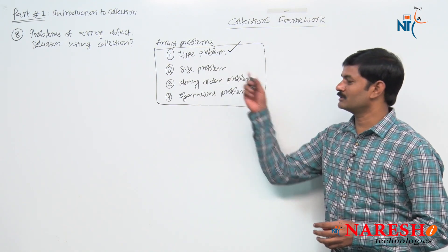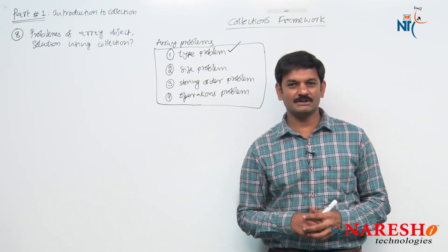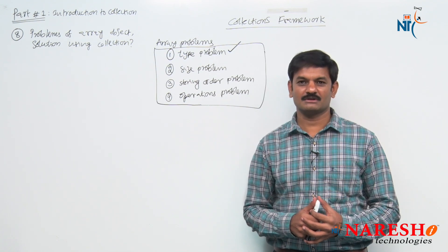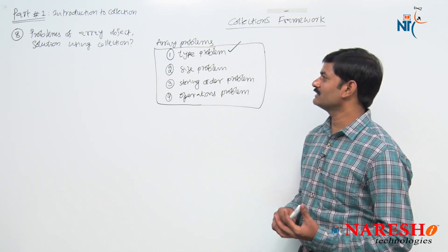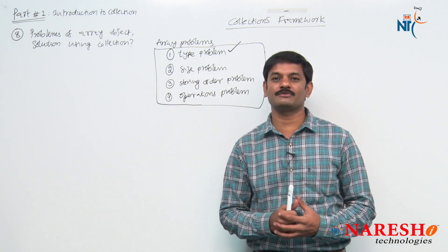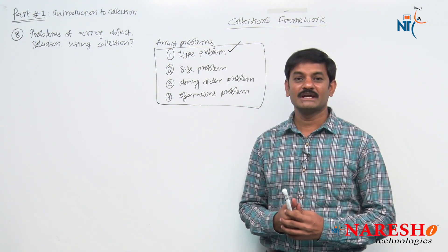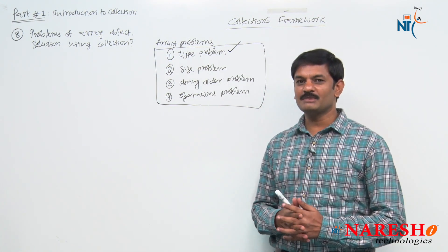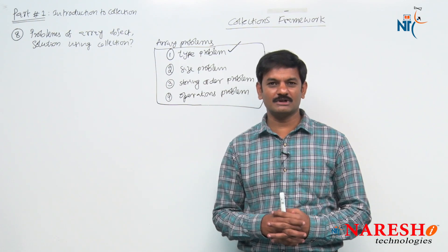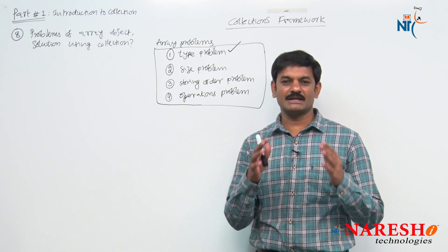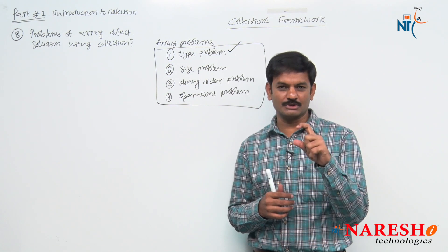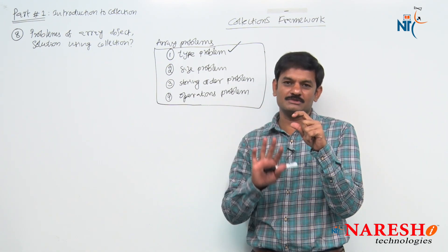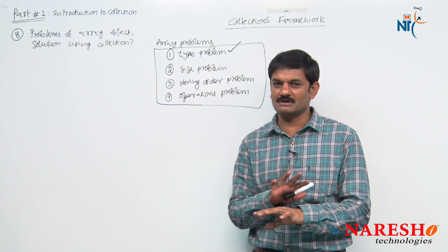The first problem is the type problem. Type problem means array is a homogeneous object — it will allow us to store only same type of objects. It does not allow us to store different type of objects. For example, if I created an array object with class Student, then only Student class objects are stored; Employee class objects are not allowed.